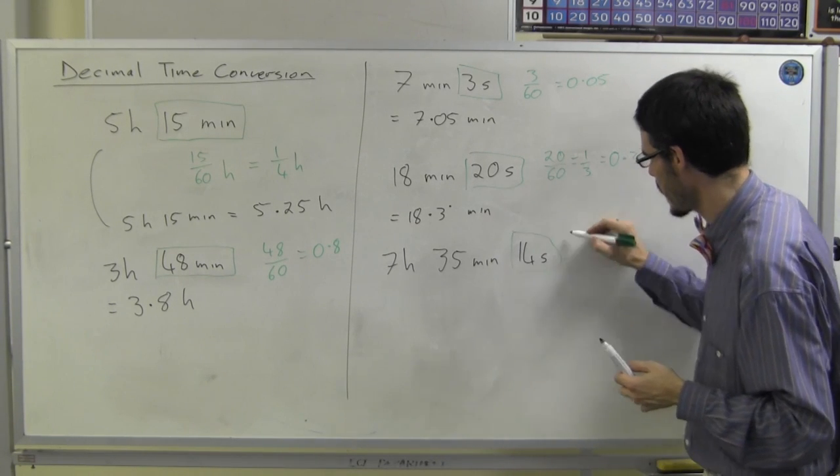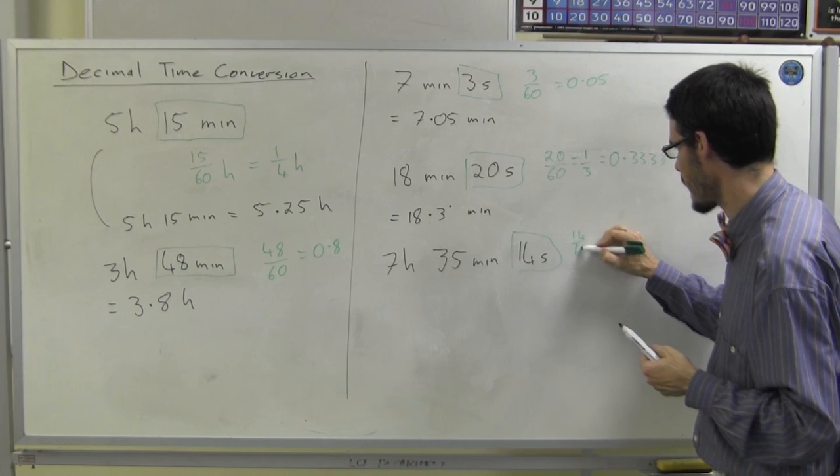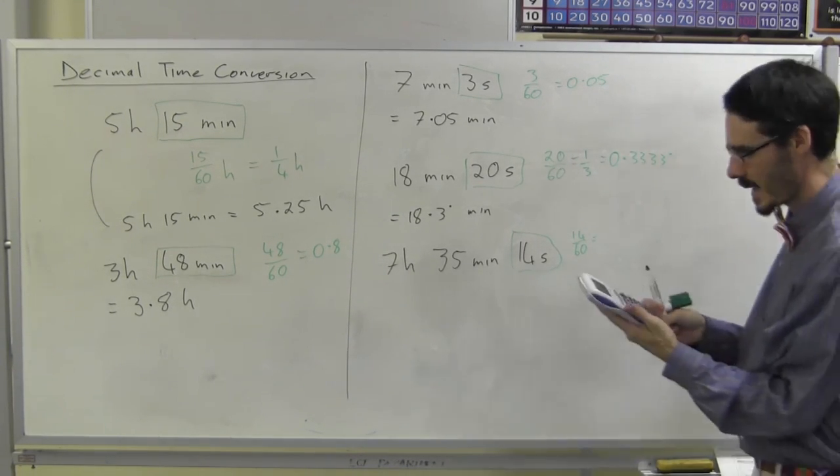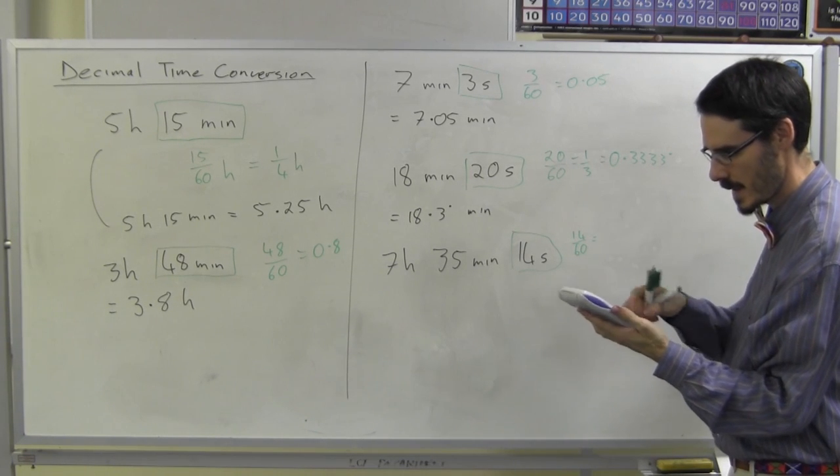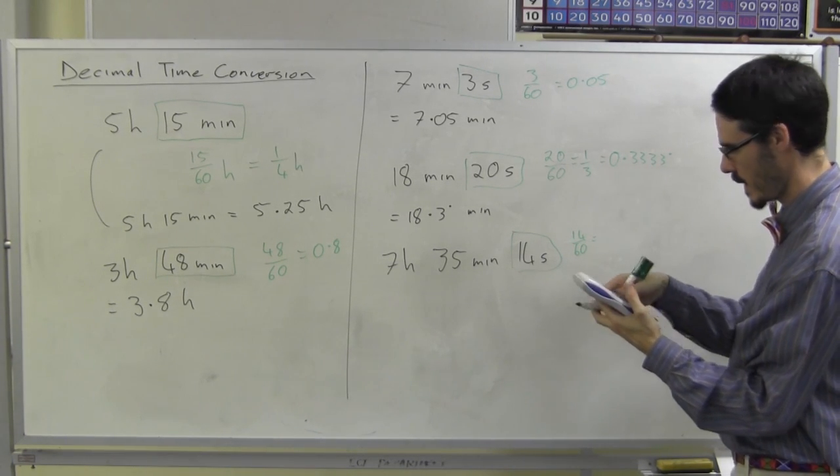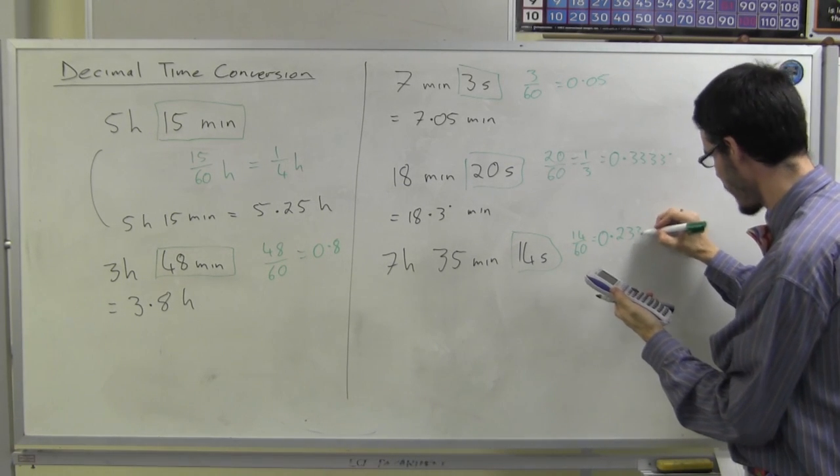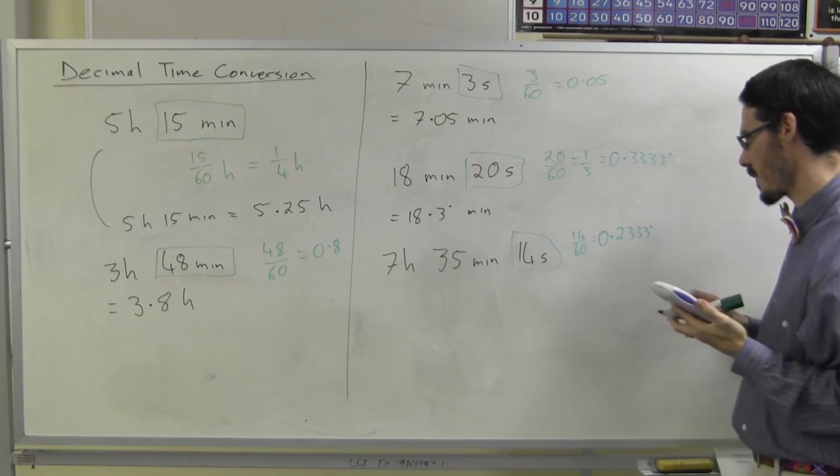Look at this bit first. That's 14 out of 60. I'm not going to try and convert it. I'm going to get my calculator. 14 out of 60 is 0.2333 going on forever.